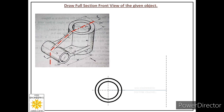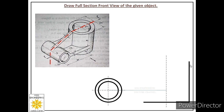We align our scale with this reference point in horizontal position and from the center line draw two lines of 35 millimeters in both directions, giving a total length of 70 millimeters — the side of the square for the front view of this cylindrical part. From one end we draw a vertical line of 70 millimeters, then a horizontal line of 70, and connect the points to complete the square.